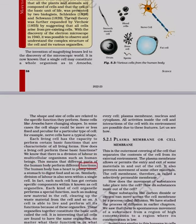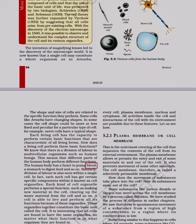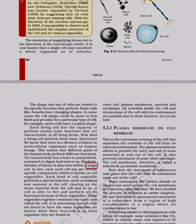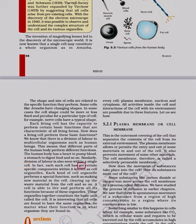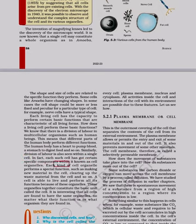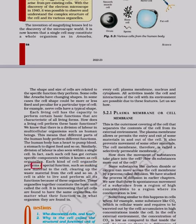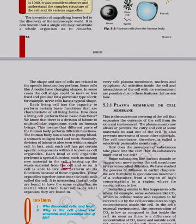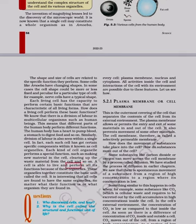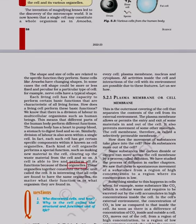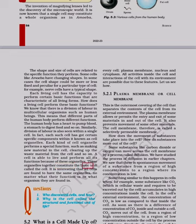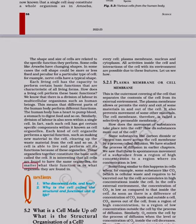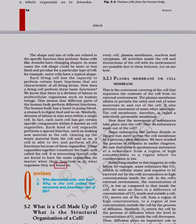We know that there is a division of labor in multicellular organisms such as human beings — different parts of the human body perform different functions. The human body has a heart to pump blood, a stomach to digest food and so on. Similarly, division of labor is also seen within a single cell. Each cell has got certain specific components within it known as cell organelles. Each kind of cell organelle performs a special function, such as making new material in the cell or clearing up the waste material from the cell. It is interesting that all cells are found to have the same organelles, no matter what their function is or what organism they are found in.